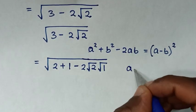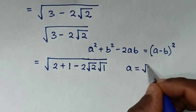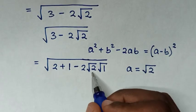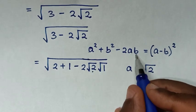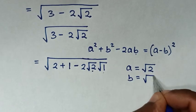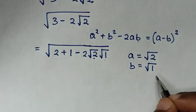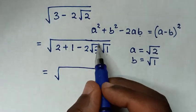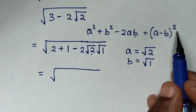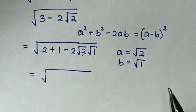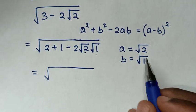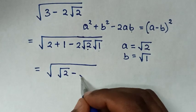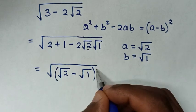Therefore we let a equal to square root of 2 and b equal to square root of 1. Then in the next step, this expression is in the form (a minus b) squared, so it will be square root of (square root of 2 minus square root of 1) squared.